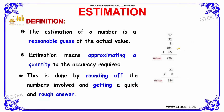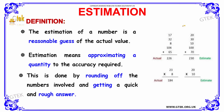If you see over here, the actual value of the addition of these numbers is 226. But rounding off the numbers to the nearby values: 17 is rounded off to 20, 32 is rounded off to 30, 8 is rounded off to 10, and 104 is rounded off to 100. Rounding off to nearby numbers which are easy to calculate, we get the sum as 230, which is approximately equal to the original answer 226. This is what is meant by estimation, in which we approximate the quantity.